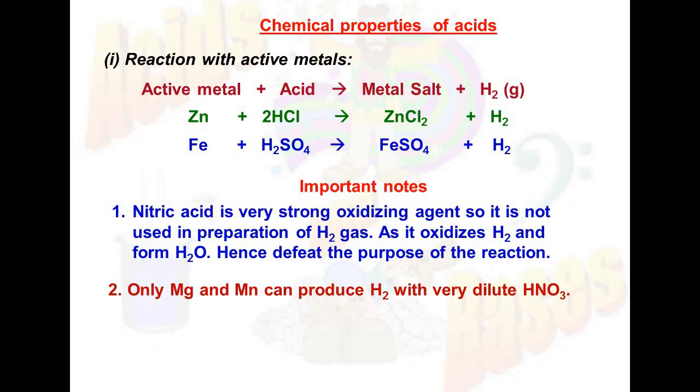Second point: only magnesium and manganese are two metals which produce hydrogen when they react with very dilute HNO3. For example, manganese plus HNO3 very dilute gives rise to manganese nitrate plus hydrogen gas. No other metals except these two will be able to produce hydrogen gas on reaction with dilute HNO3.